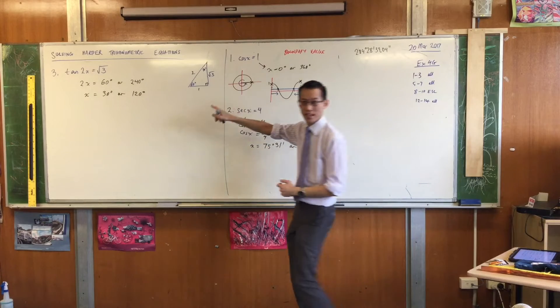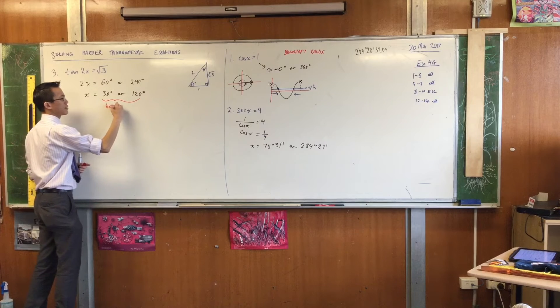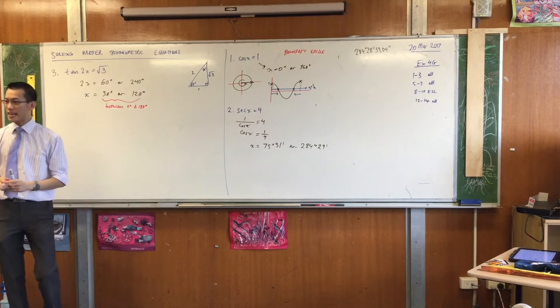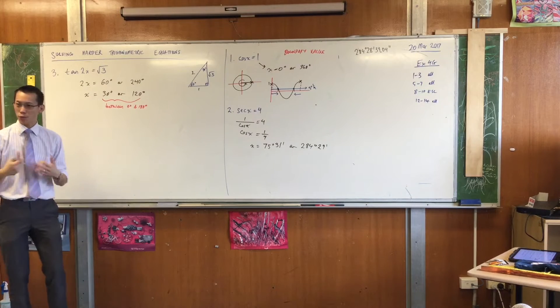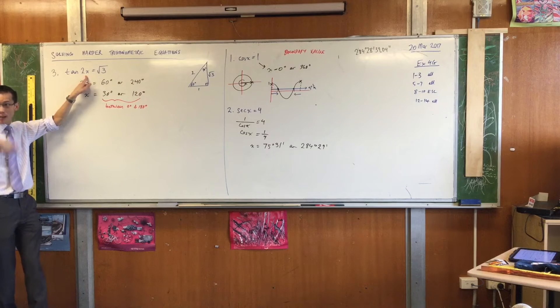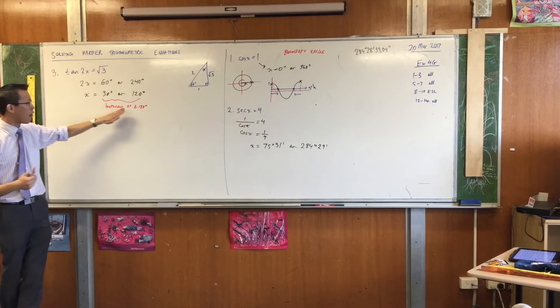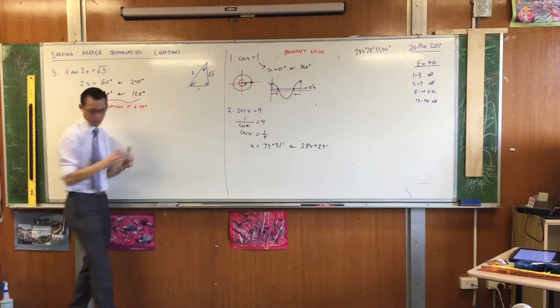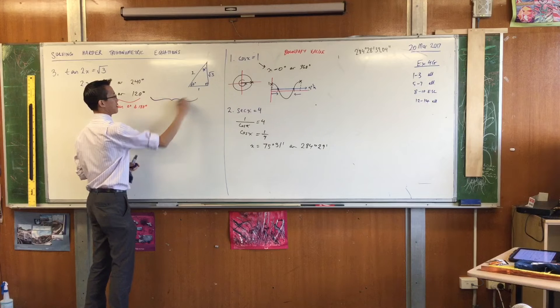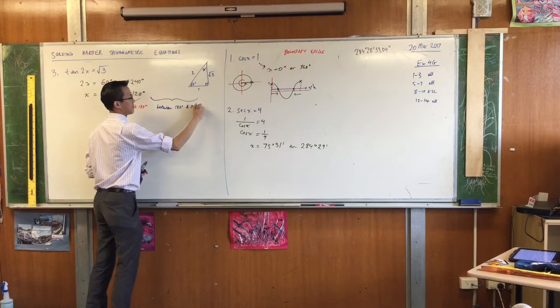So if there are two solutions here between, and you might even like to write this down, between 0 and 180, then it stands to reason, if the original tan graph was periodic every 180 degrees, then this guy, which is twice as frequent, is periodic every 90 degrees. So therefore, I'm going to get more copies between, oh, different color, between 180 and 360.